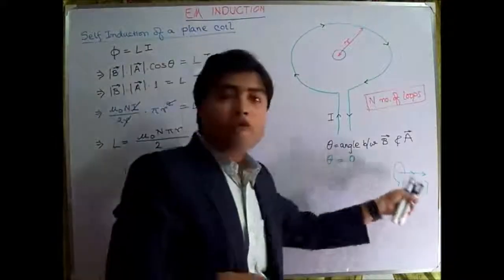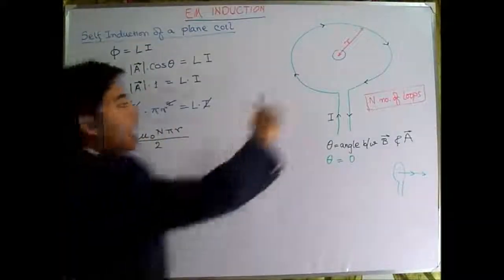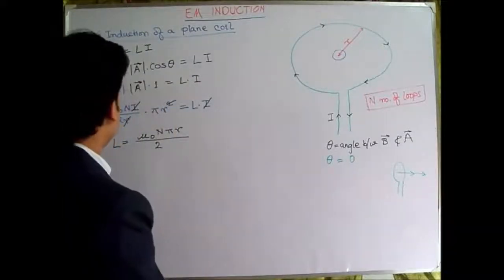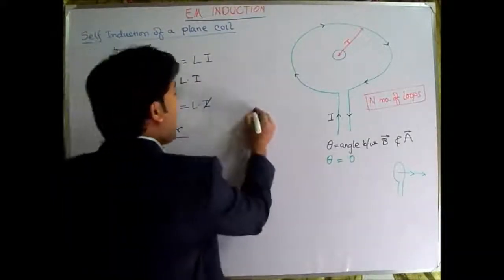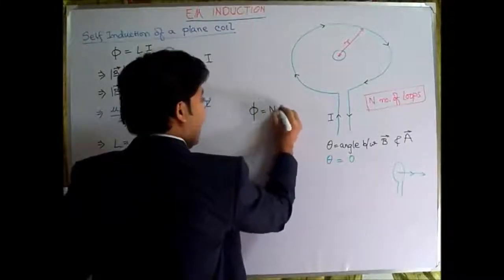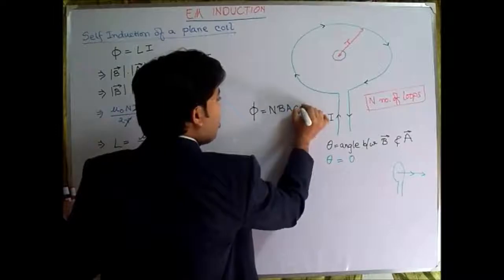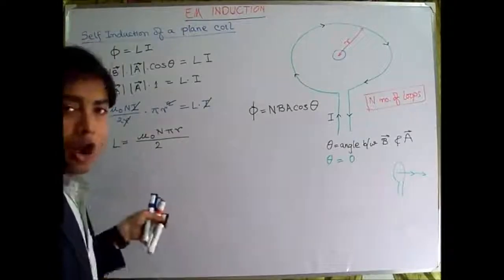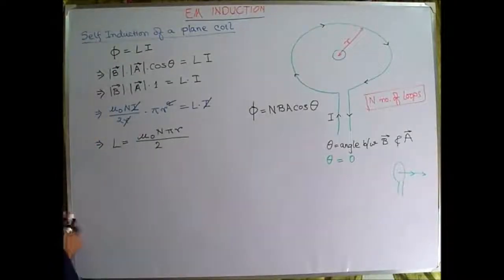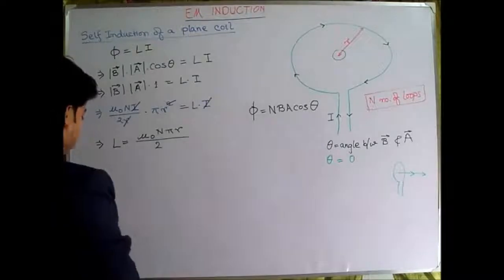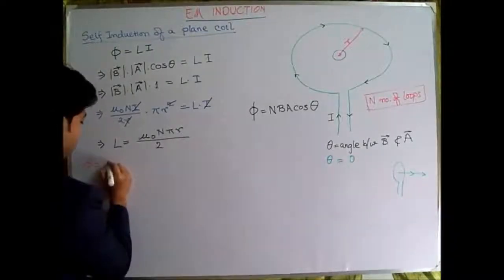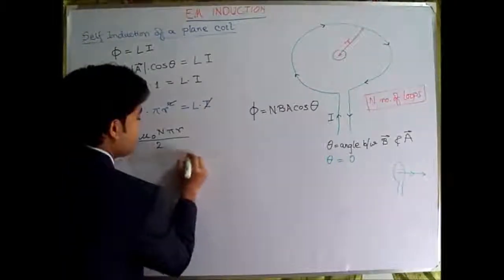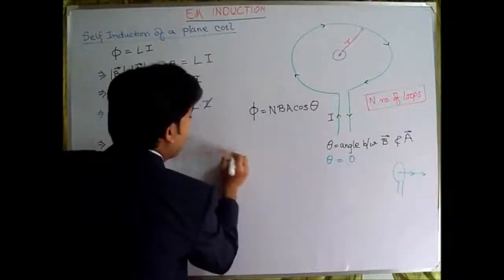For the N number of coils, this is for one coil. For N number of loops of the coil, we know that φ = NBA cos θ. This is for one coil, so for all the coils, for N number of loops of the coil...